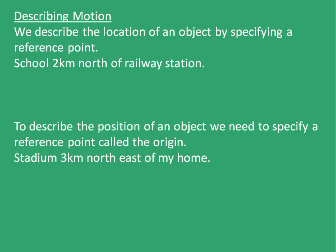To begin with, let's start describing motion. We describe the location of an object by specifying a reference point. For example, if I say school is two kilometers north of railway station, we say that if this is the railway station, my school will be somewhere here, two kilometers north.